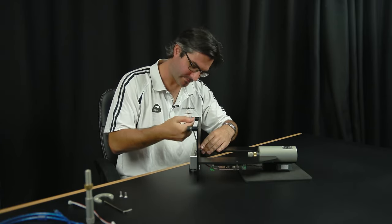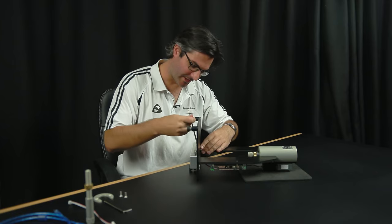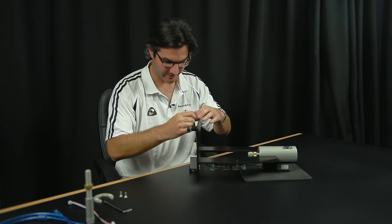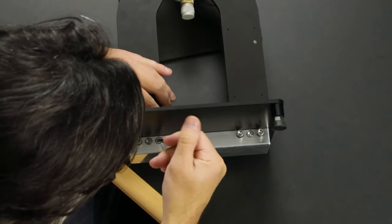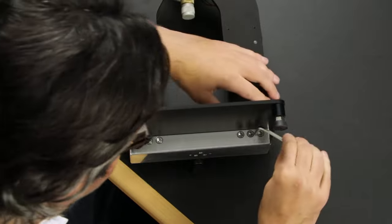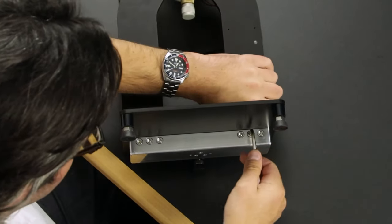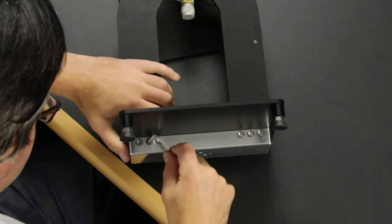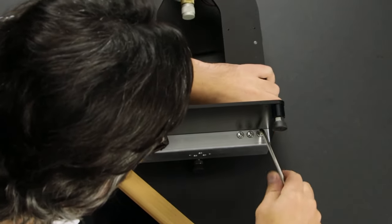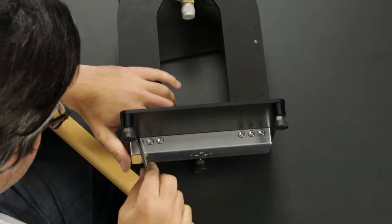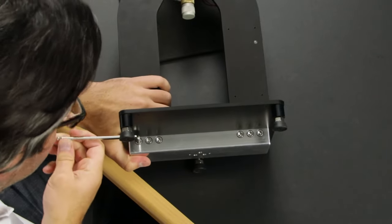Once that's in, you want to tighten these up fairly tight, so we'll get all six of them in here. Giving that a decent crank with the Allen key on each bolt. We don't want these to come loose.